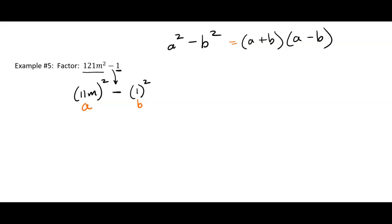In my answer, I'm going to have a, which is 11m, plus b, which is 1, and then 11m minus 1. And you can check that with FOIL, but that's how it's going to factor. So you get one with a plus and one with a minus.